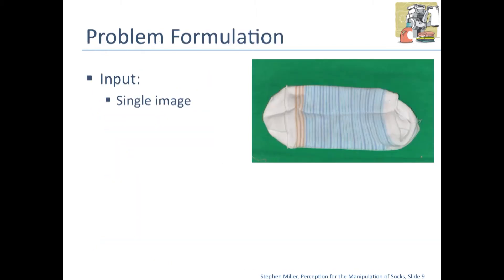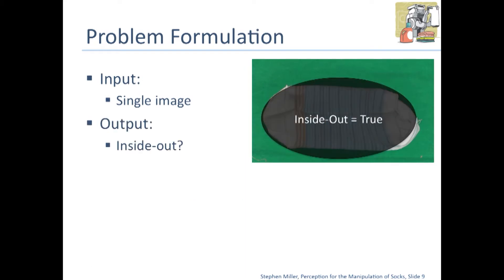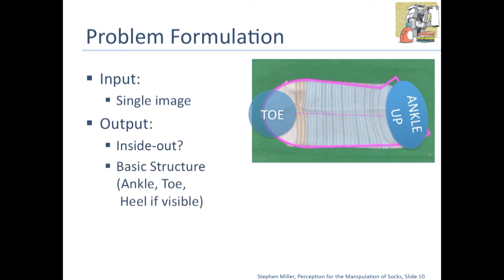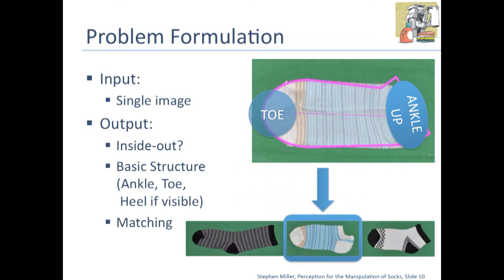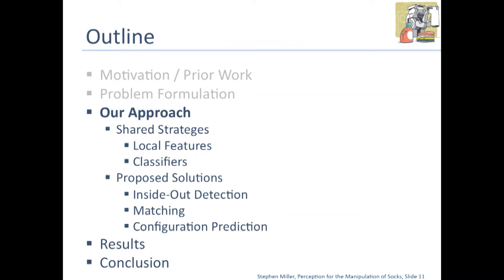An outline of our approach: we're going to start with a single image as input. We want to output whether it's inside out, something about the basic structure — the toe and the ankle — and also we'd like to match it out of a candidate selection of socks. We're going to have some strategies that we share throughout all three problems, and then a few unique solutions.